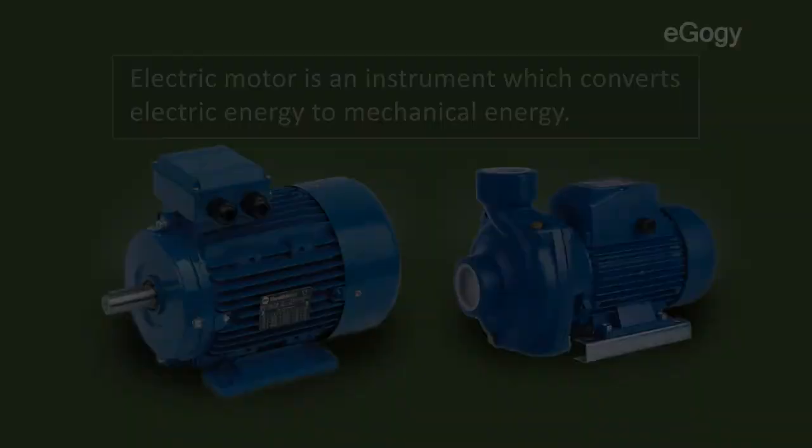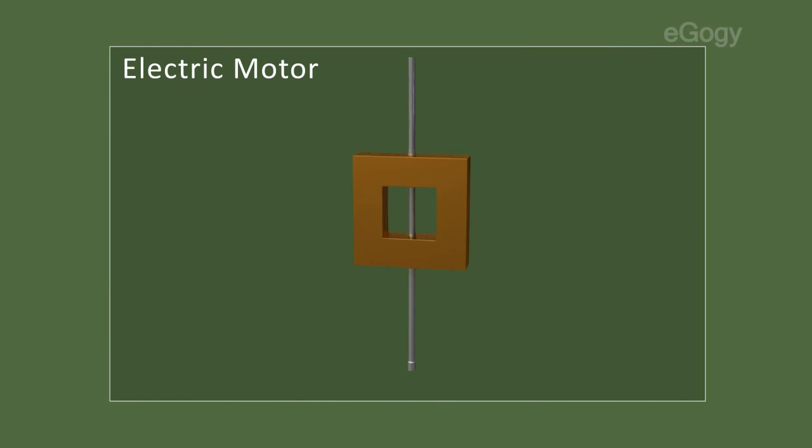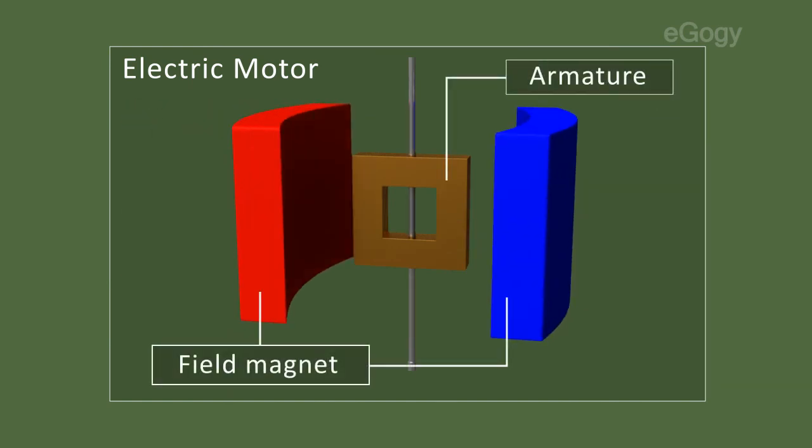Electric motor. Electric motor is an instrument which converts electric energy to mechanical energy. Here, we can see the opposite process in the electric generator. The main parts of an electric motor is an armature coil and a field magnet.